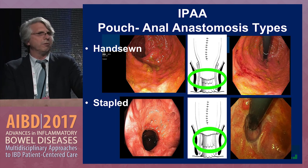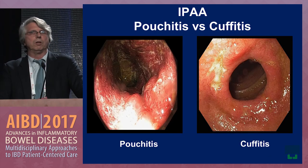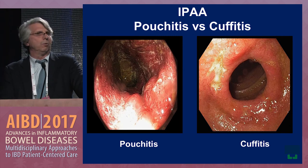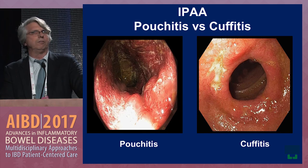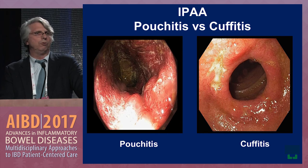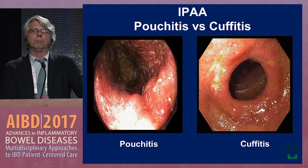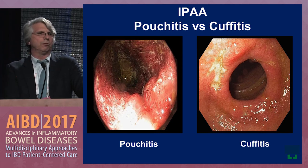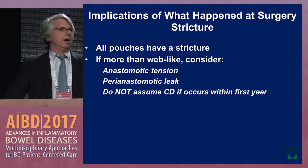Knowing the anastomosis type is critical. If a patient has diarrhea, you need to determine whether it's cuffitis — inflammation of the retained rectal cuff down to the dentate line. In a case of apparent pouchitis, the pouch interior may be completely normal while the cuff shows ulceration down to the dentate line. That circular cicatrix and ulceration below it is cuffitis — with enormous diagnostic and therapeutic implications. All you have to do is go back to the op report to see what was done.